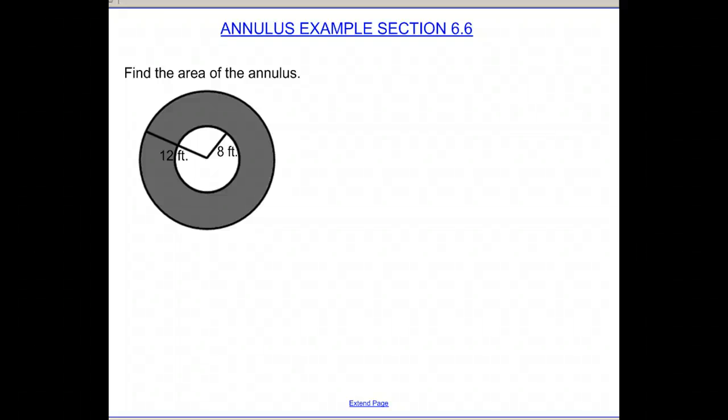Today we're going to go through an example of finding the area of an annulus. An annulus you can think of kind of like a donut. So basically we're going to find the area of a shaded piece of a circle, but it's a cutout of an inside circle and we're finding what's left on the outside.